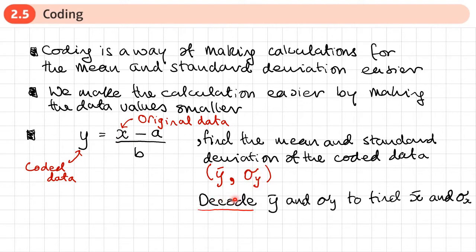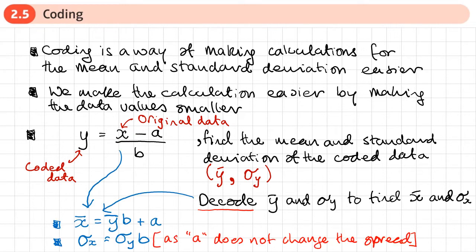The next step is to decode the values — y-bar and the standard deviation of y — to find the mean and standard deviation of the original data. The decoding works like this: if we take the mean of y, multiply it by b, and add a, we get the mean of the original data x. If we take the standard deviation of y and multiply by b, we get the standard deviation of x.